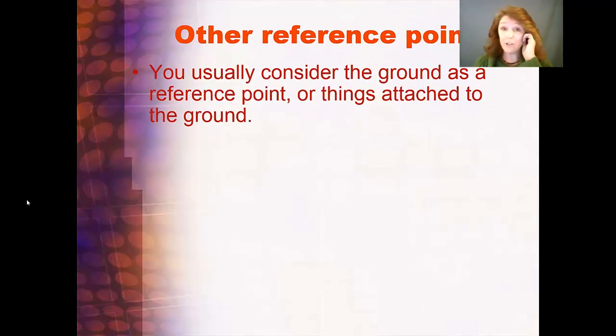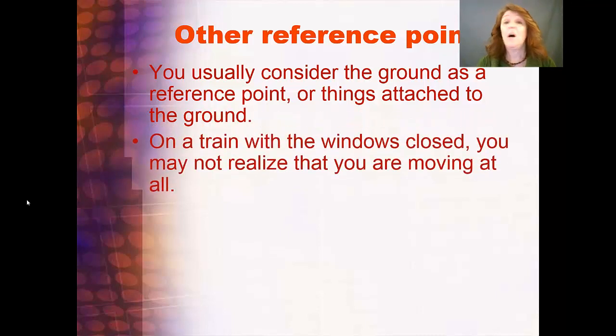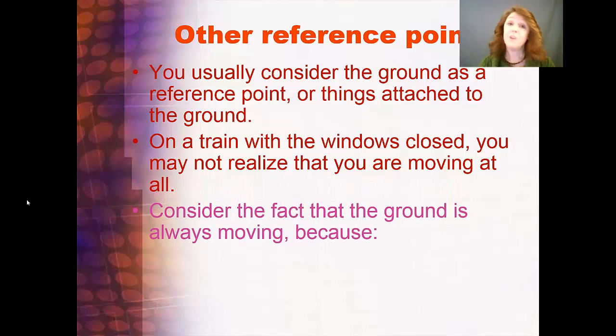There are a lot of reference points. Usually we consider something that's attached to the ground or the ground itself as our reference point because we know that that's not moving. On a train with the windows closed, you could be sitting in a train compartment, and everything around you is moving exactly the same speed as you are. Or it feels like you're not moving, so you could be sitting talking to the person across from you, playing cards with them, having a cup of coffee, and all of this doesn't feel like it's moving because it's all moving at the same speed.